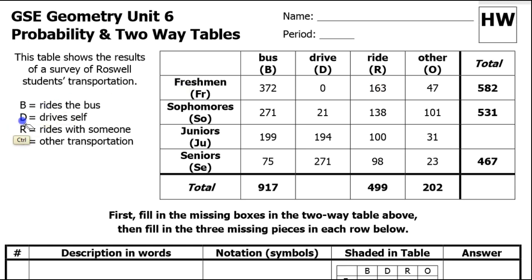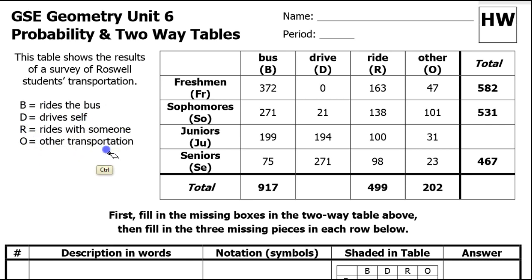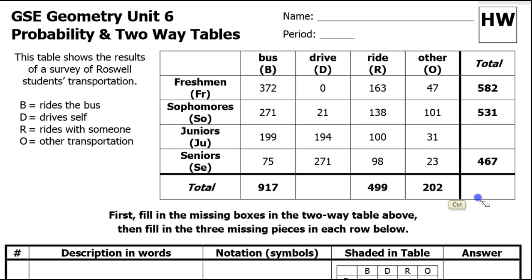We have B, D, R, and O — people who ride the bus, people who drive themselves, people who ride with someone, and people who take other transportation. That's what's going on across the top. And of course we have freshmen, sophomores, juniors, and seniors going down the side. Across the bottom and down the right-hand side will be totals.